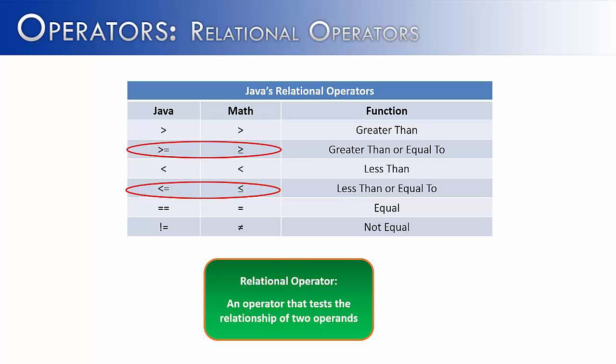There's no greater than with an underline underneath it, meaning equals, on a keyboard, and therefore Java uses two symbols, the greater than and equal to, or the less than and equal to symbol, meaning the exact same thing.